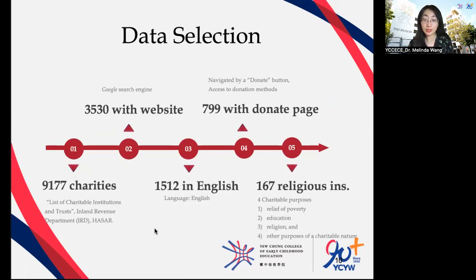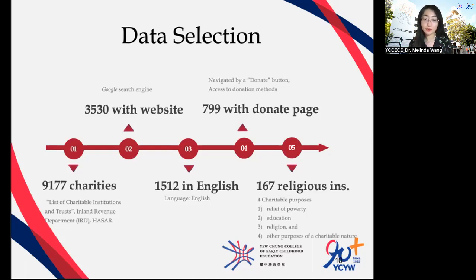In the present study, all charities mentioned were on the list of charitable institutions and trusts. As of 2020, 9,177 charities were on the list. There are three criteria for data selection: whether the charity has a visible website, whether its website is in English, and whether there is a donate page on their website. After selection, 799 institutions remained. In Hong Kong, a charity must be established exclusively for charitable purposes, classified into four categories, among which charities established for the advancement of religion had the highest percentage. So finally, we selected 167 religious institutions.